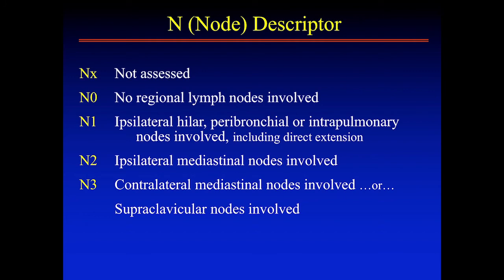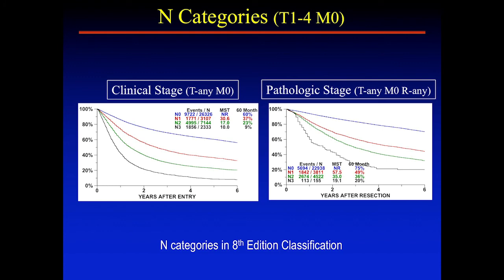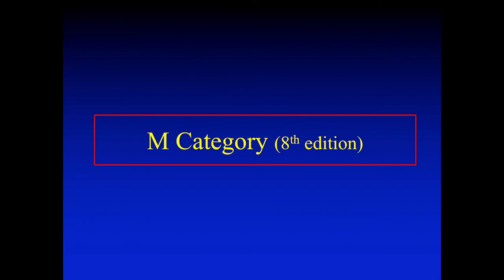Moving on to the N category: the good news is that nothing has changed. N0 is no nodes, N1 are nodes within the lung parenchyma, N2 are ipsilateral mediastinal nodes, and N3 are contralateral mediastinal or supraclavicular nodes. The survival curves are as before.